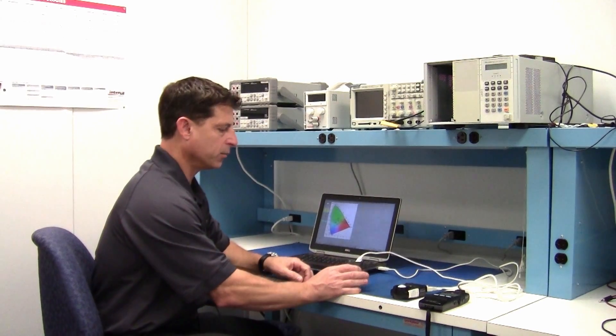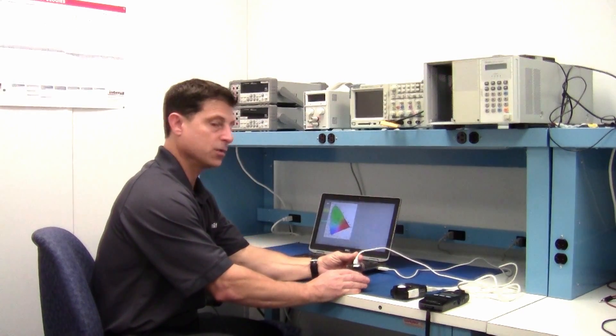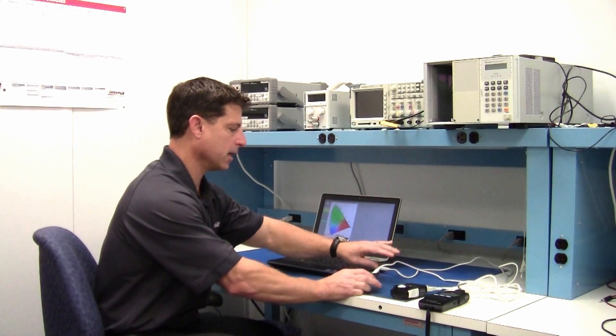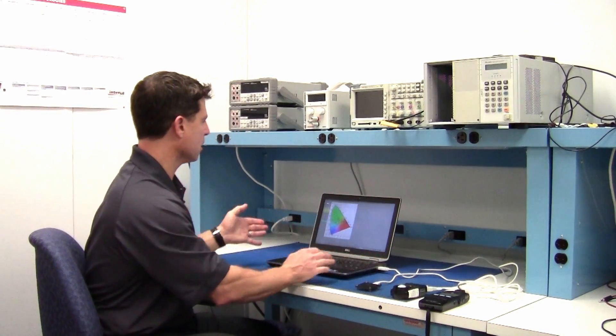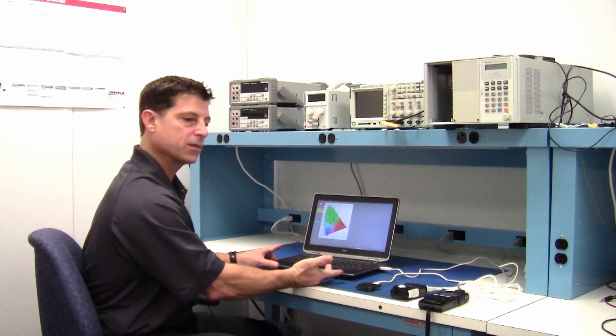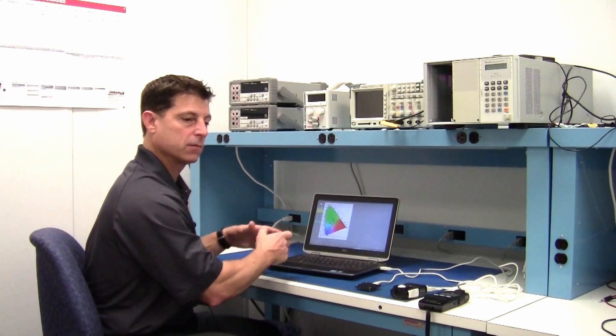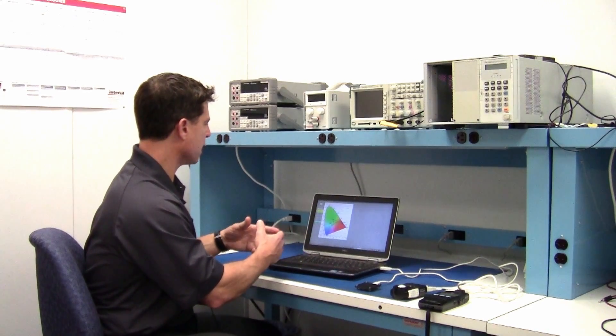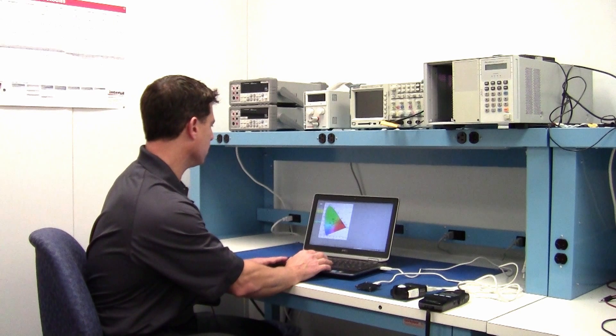So I've plugged our ISL29125 RGB ALS into the USB port, and you do that first, and then launch the Chromometer application, the GUI, that you would get off of our website or on your CD that comes with the eval card. And so once you launch that, it looks like this, and you get readings.